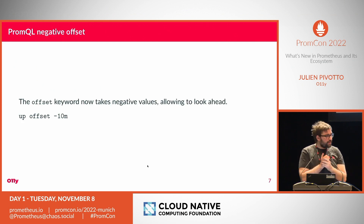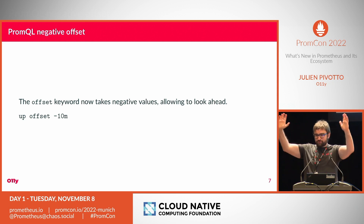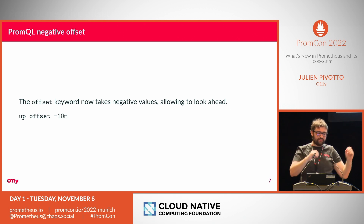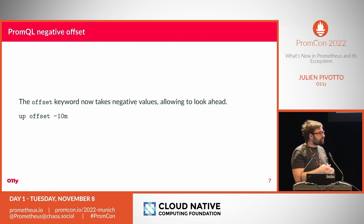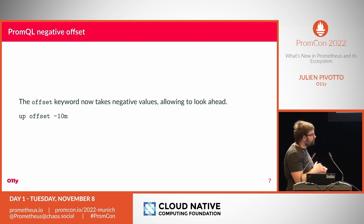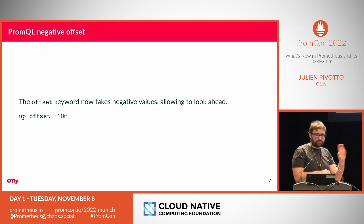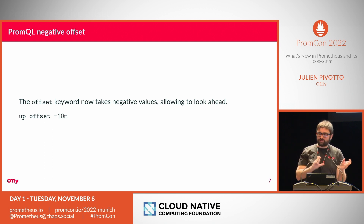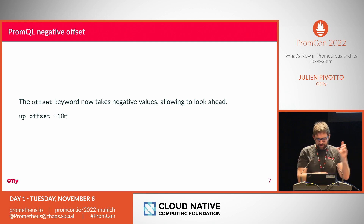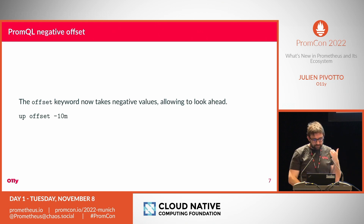There is now negative offset support. Previously offset allowed you to select a metric in the past; now you can do the opposite and use a negative offset to see a metric in the future. This is useful when the metrics you're looking at don't have the right timestamp. I had one provider that gave us metrics with a 20-minute delay — we had to hack Grafana at the time, but now you can do it natively in Prometheus with an offset of minus 10 minutes.